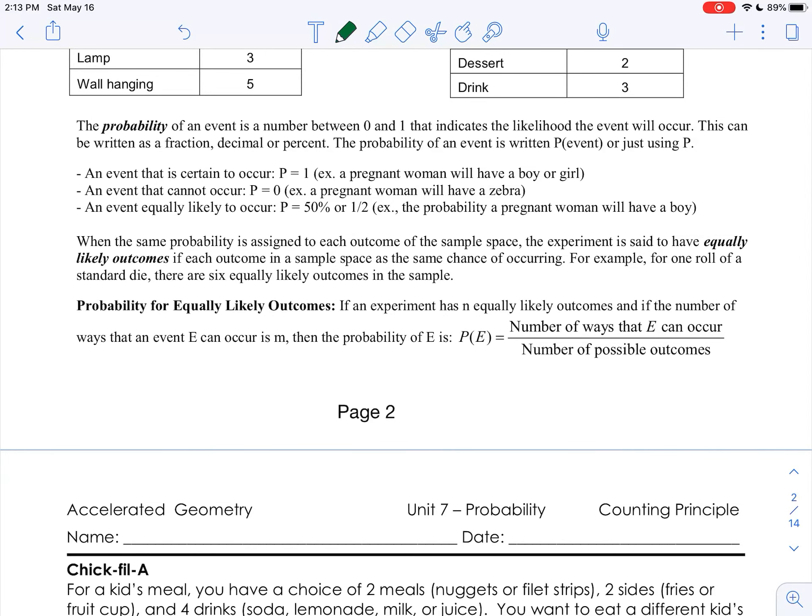The probability that an event occurs is represented by a number between 0 and 1, and that is to show the likelihood that that event will occur. And that number is usually written as a fraction, a decimal, or a percent.